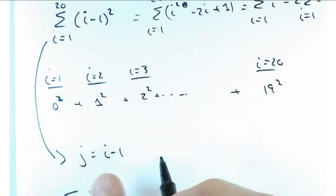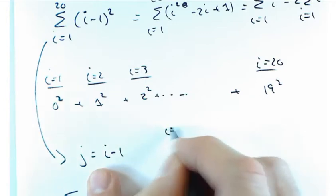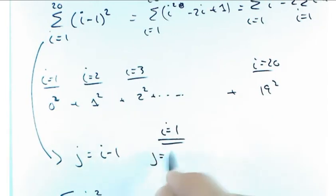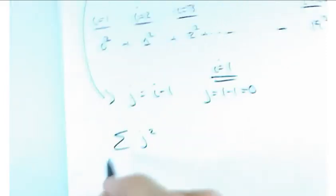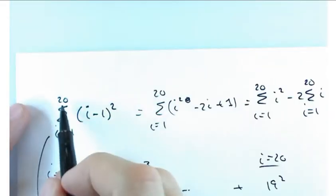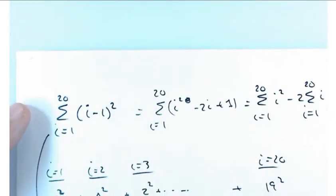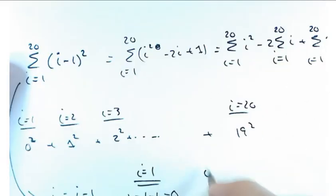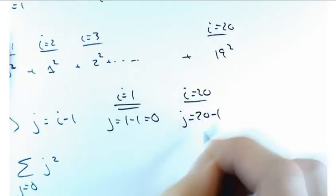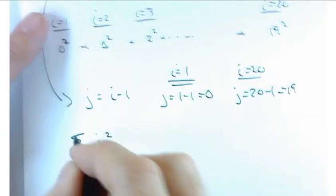When I is 1, what is J going to equal? J equals 1 minus 1 will be 0. So, we'll sum from J equals 0. Now, what's going to happen at the top of this when we get up there to 20? When I equals 20 what's J going to equal? Yeah, so 19. So, there we go.